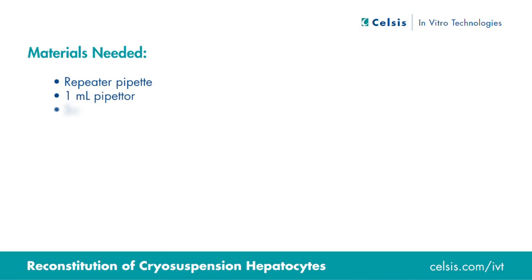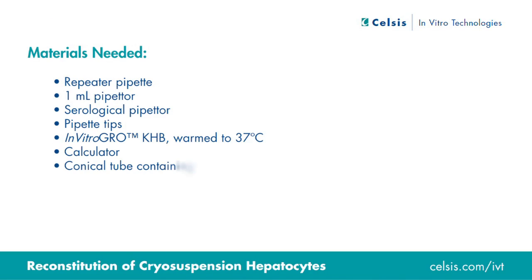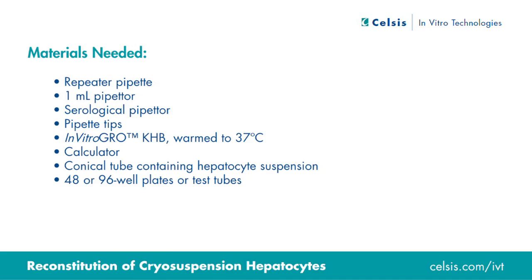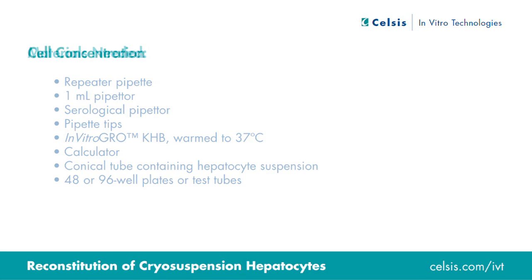You'll need pipetters, pipette tips, a 250 milliliter bottle of pre-warmed in vitro grow KHB, a calculator, the conical tube containing the hepatocyte suspension, and multi-well plates.